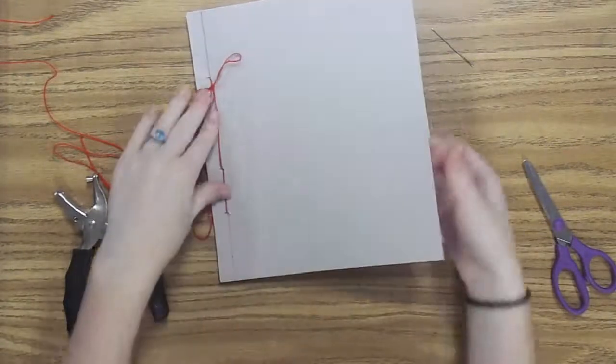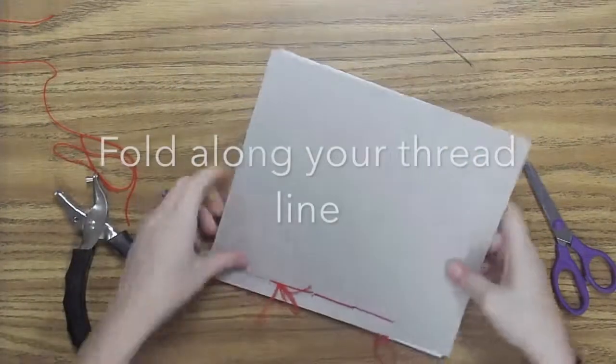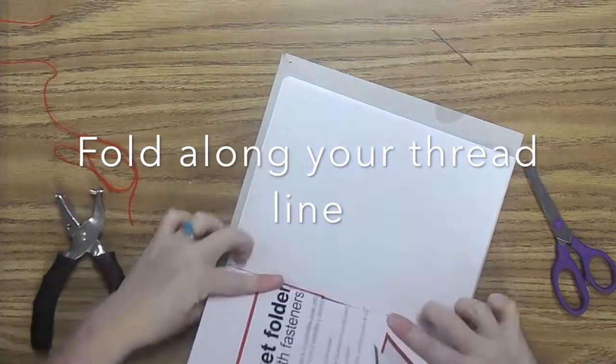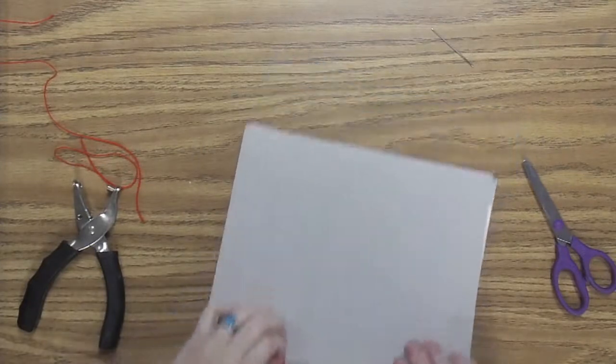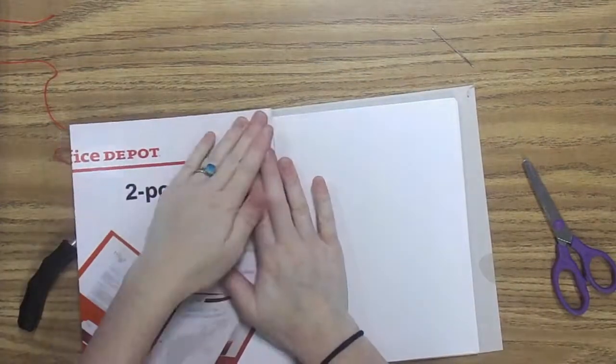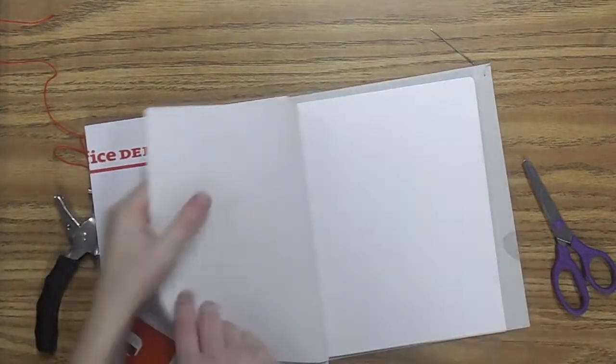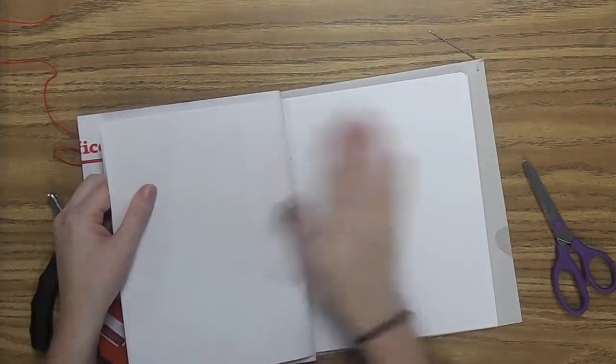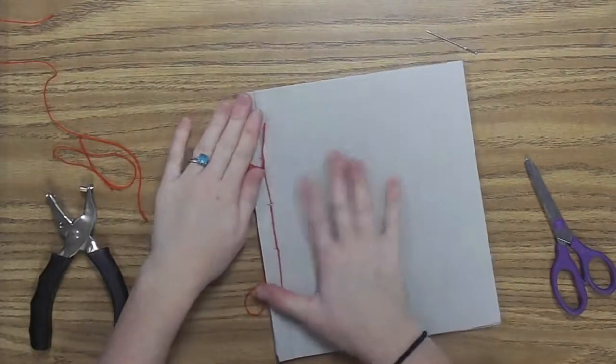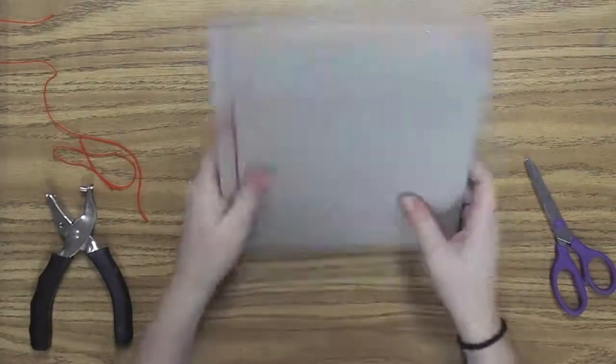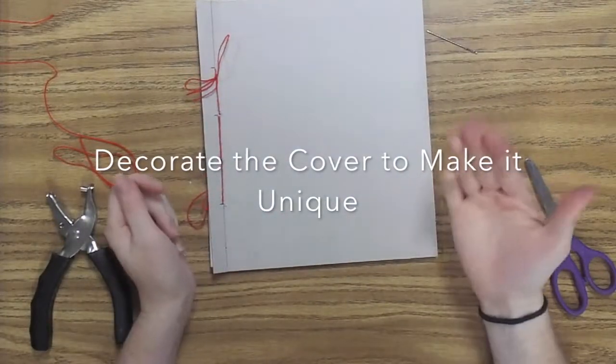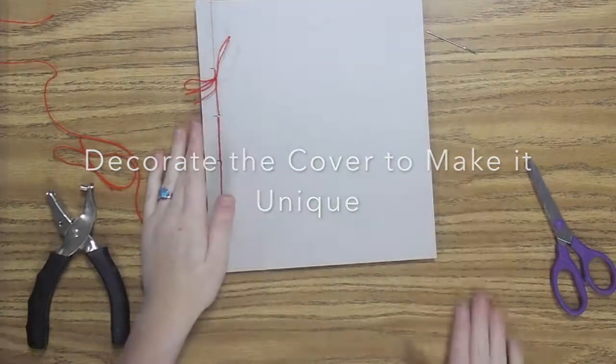And now you are tying together the two ends. But you've got your sketchbook. Now you can decorate the cover however you choose. This is all in it. That was how to make your very own sketchbook. Let's get started. Thank you.